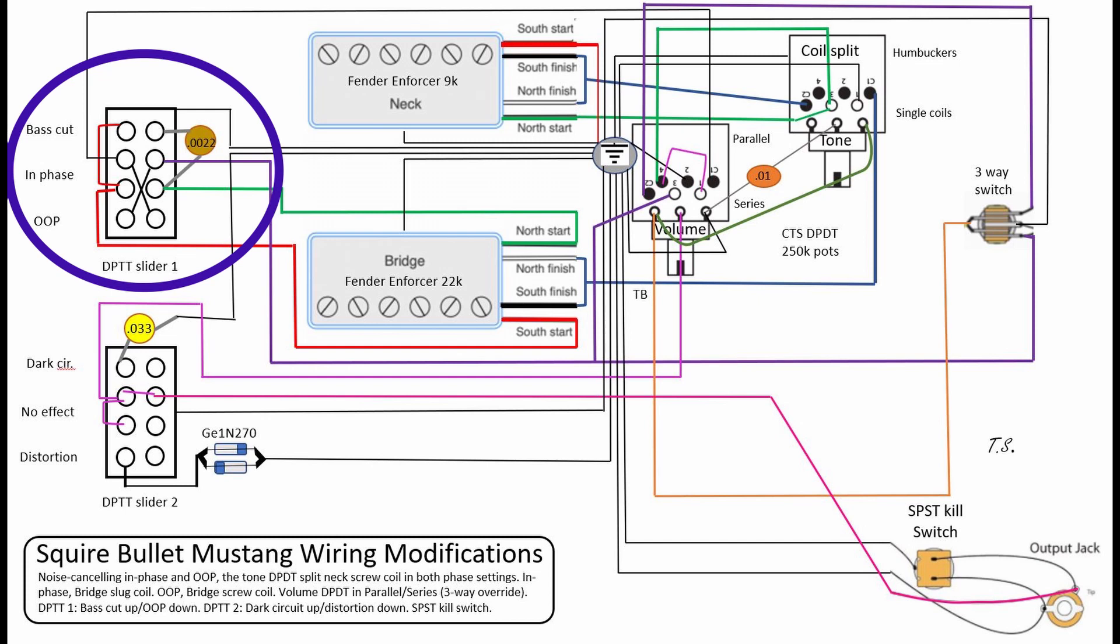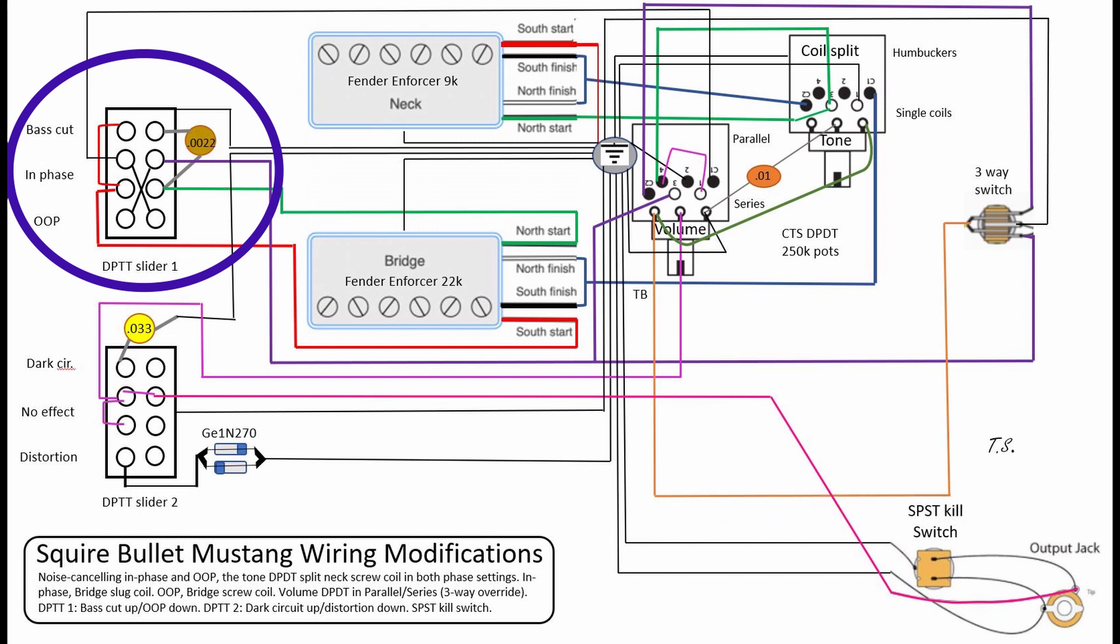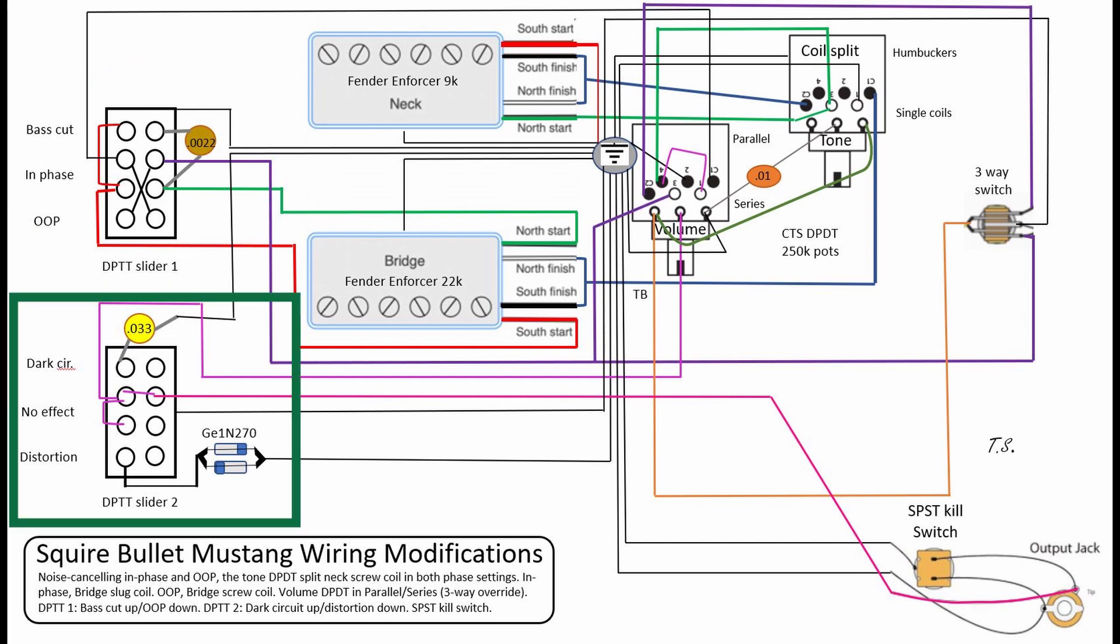And basically what this does is then flips the phase between the two humbuckers or single coils, if you want to use it that way. So normally, just to talk about it in terms of single coils, if we were to coil split using the push-pull pot of the tone switch, then the non-coil bridge would be split and the coils of the neck would be engaged. When we do out of phase, basically, it puts the non-coil and the non-coil together, which means that the polarities are the same and they're out of phase.